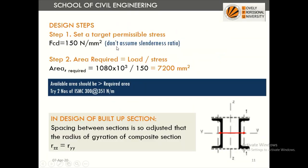To begin the design, we need a trial section. Instead of assuming slenderness ratio, we directly assume FCD as 150 N/mm². Then required area equals load divided by stress: 1080 kN divided by 150 N/mm² gives a required area of 7200 mm². Based on this, we select two numbers of ISMC 300 at 351 N/m, giving an available area greater than required.